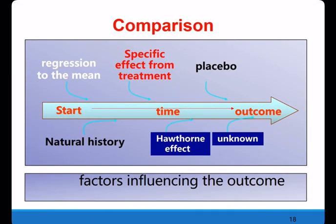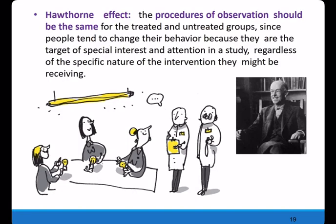The next principle is comparison. The reason to establish a control group is to differentiate the specific effect from the non-specific effects of the test intervention. Non-specific effects include unpredictable outcomes, regression to the mean, the natural history of the disease, other factors associated with the outcome, the Hawthorne effect, and the placebo effect. The Hawthorne effect means people tend to change their behavior because they are the target of special attention in the study, regardless of the specific nature of the intervention they receive.